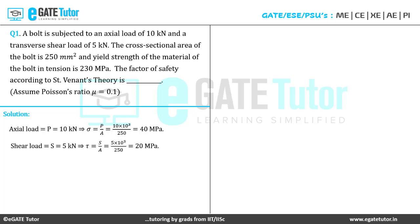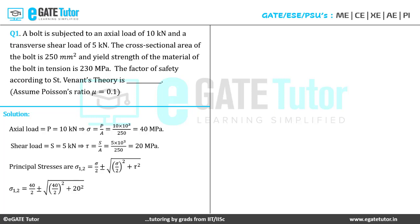The next step is to calculate the principal stresses. Using the formula σ₁,₂ = σ/2 ± √((σ/2)² + τ²), with σ = 40 MPa and τ = 20 MPa, we get σ₁ = 48.28 MPa and σ₂ = −8.28 MPa.